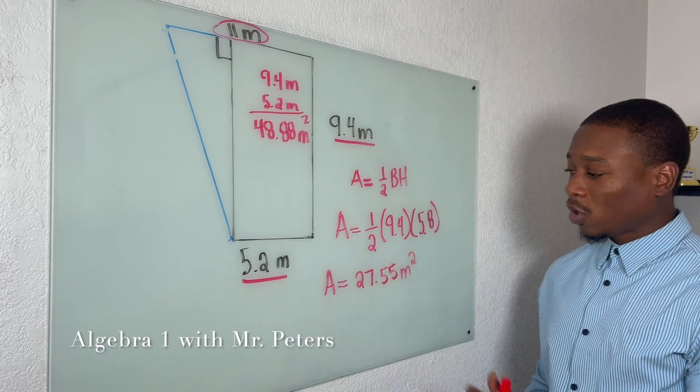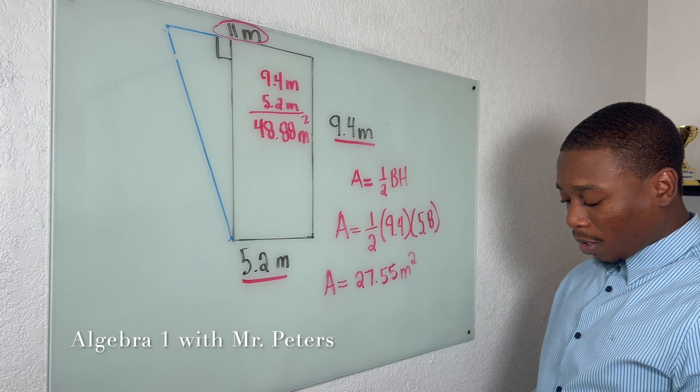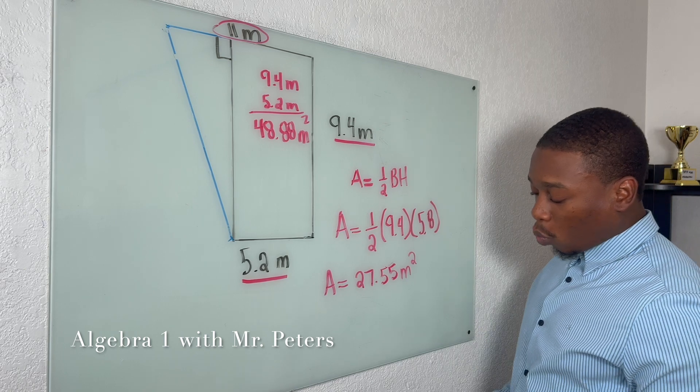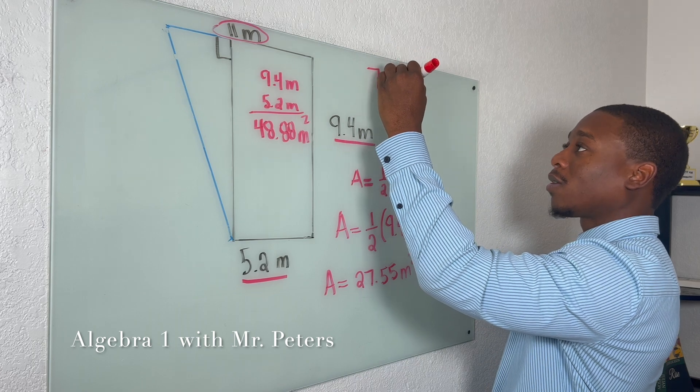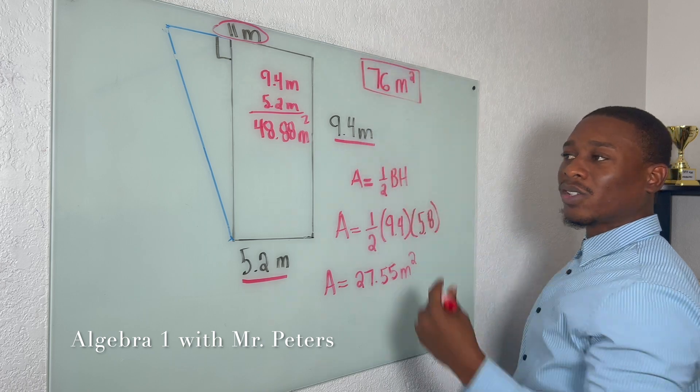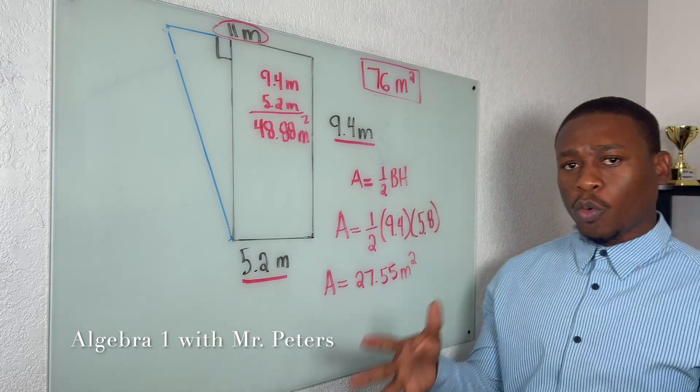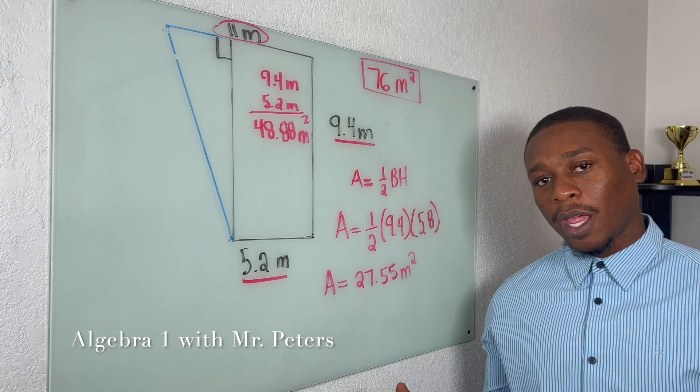So now what we're going to do is we have the area for our triangle, we have the area for the rectangle. Once we add both of them together, we should get 76 meters squared. And I'm just rounding this off, if you want to include decimals, you can.